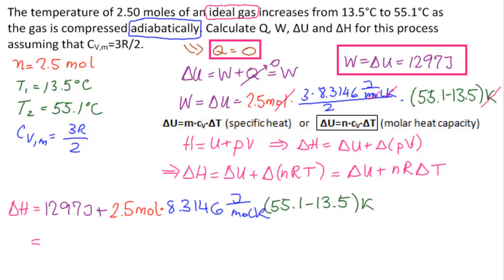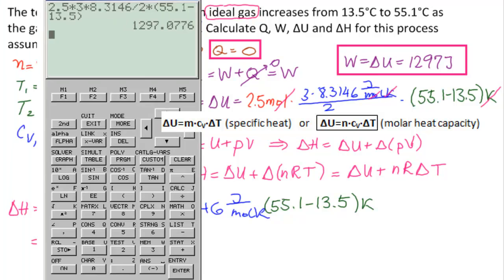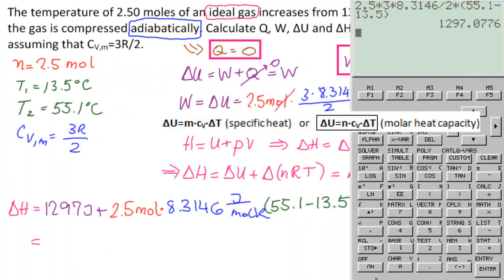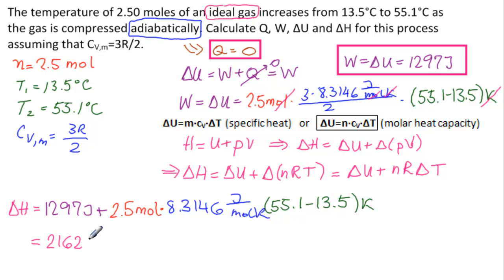Let's get our calculator. So we have 1297 plus 2.5 times 8.3146 times, and we'll do the parenthesis again, 55.1 minus 13.5, and parenthesis, enter. 2,162 joules. 2,162 joules is delta H. And so this is the answer to the last part of the problem.